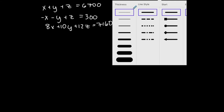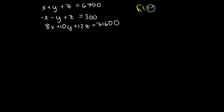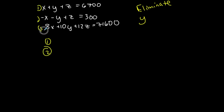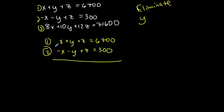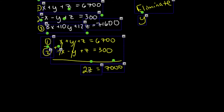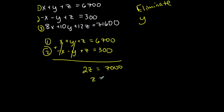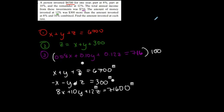I'll choose a variable to eliminate — let's eliminate y. Starting with equations one and two: x plus y plus z equals 6,700 and negative x minus y plus z equals 300. Adding these two together eliminates both x and y, giving 2z equals 7,000. Dividing by 2, z equals 3,500.